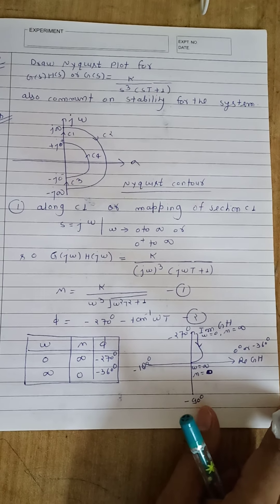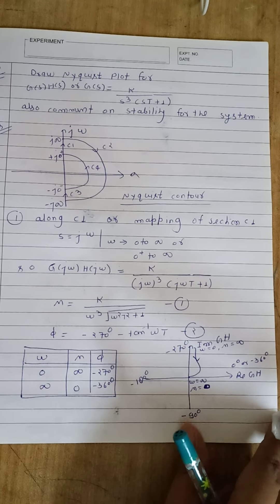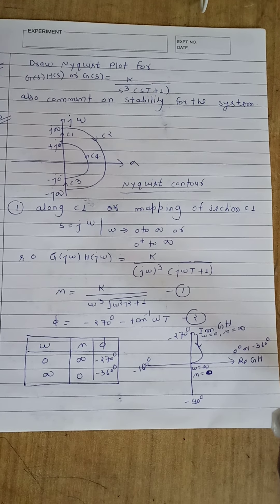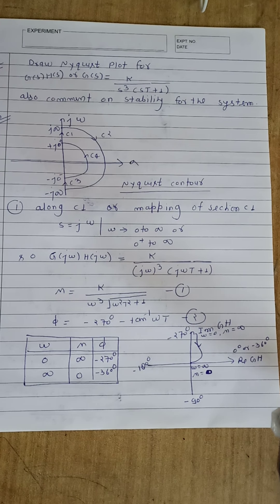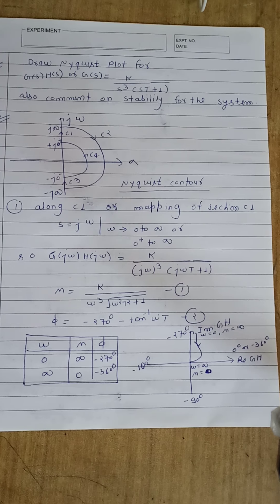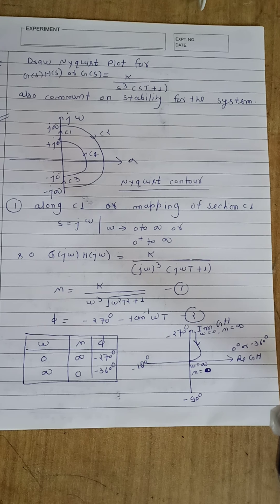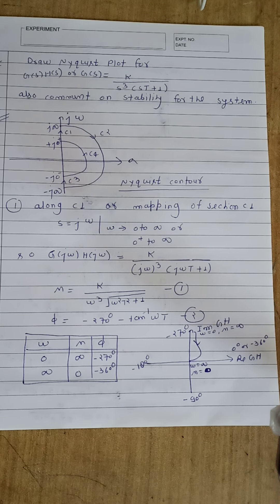Hello everyone. Now let us see one numerical for the Nyquist plot. Some students are facing problems with numericals for the Nyquist plot, so here we will discuss the solution for the given numerical. We have the open loop transfer function K upon s to the power 3 times (sT plus 1). We want to draw the Nyquist plot and also determine the stability for the closed loop system according to Nyquist stability criteria.